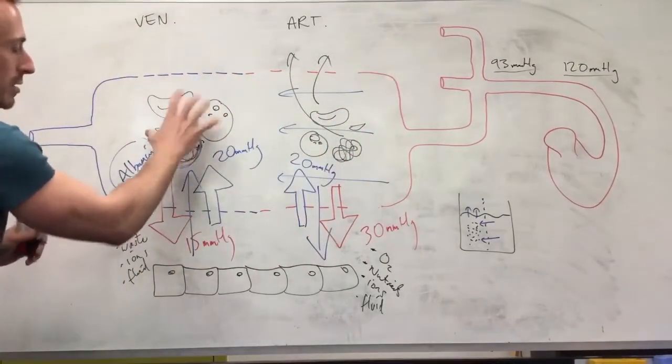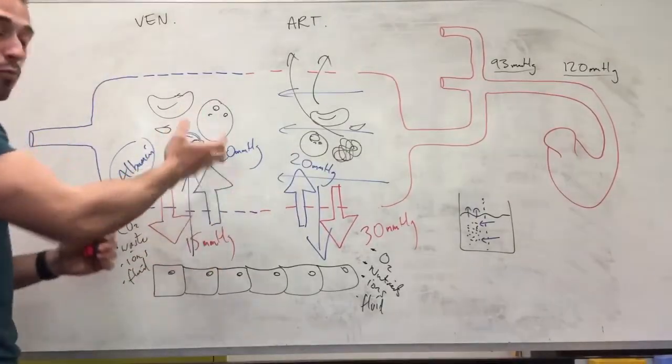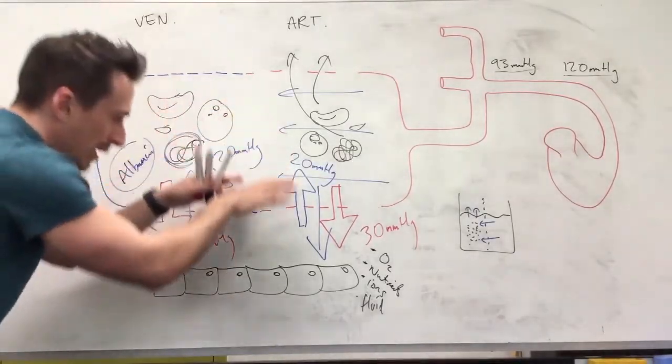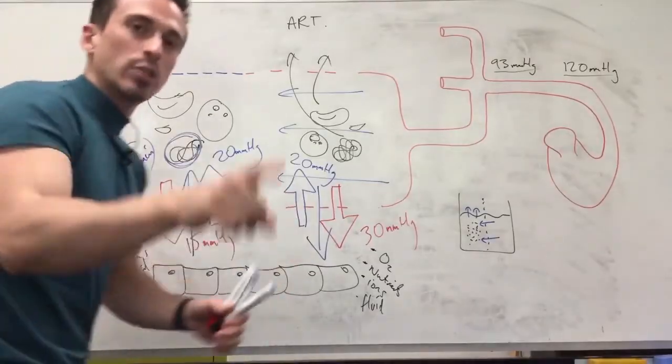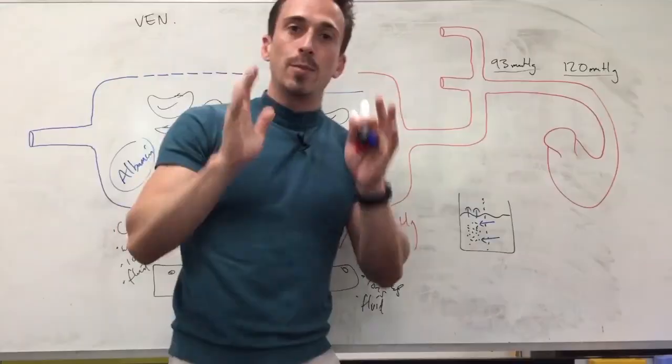Which now means by the time we get to the venous end there's no proteins and cells left for that inward pull due to the colloid osmotic pressure or force, and everything again stays out in the tissue. That's why you get swelling at the site of inflammation. So this is capillary exchange.